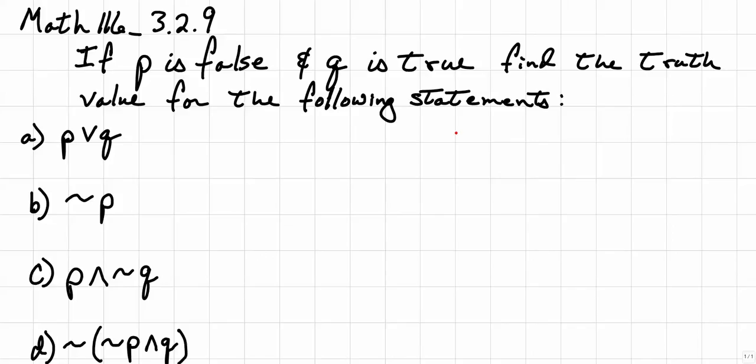First, we need to remember that certain symbols have certain names and meanings. This is what we call a disjunction, and it is the logical connector OR.